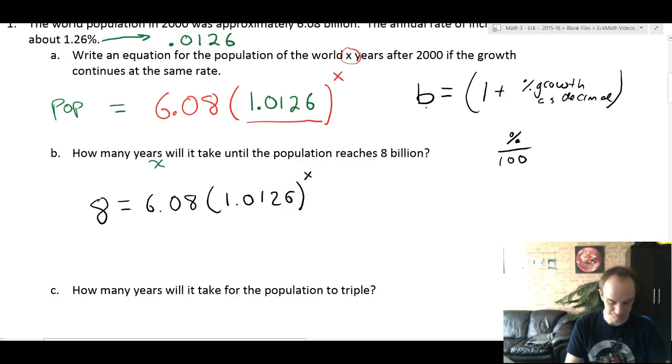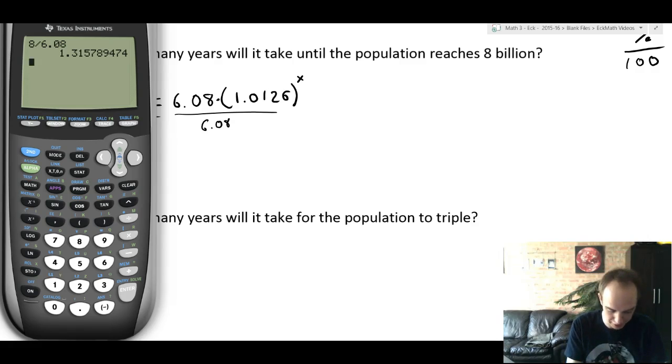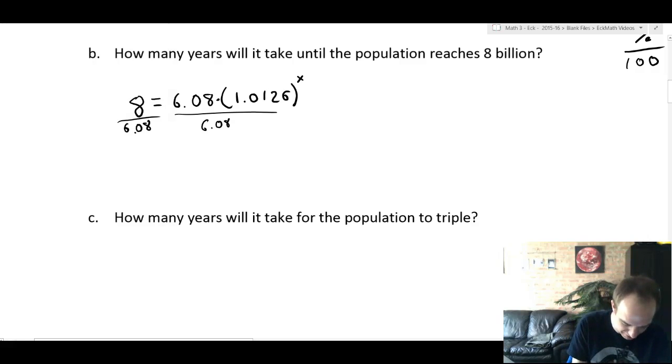Well there's one thing I know we can do right away and that's divide by 6.08. So doing that in our calculator it's 1.3157. So we'll write 1.3157 equals 1.0126 to the x. I'm leaving a little space here because I'm about to do a log.